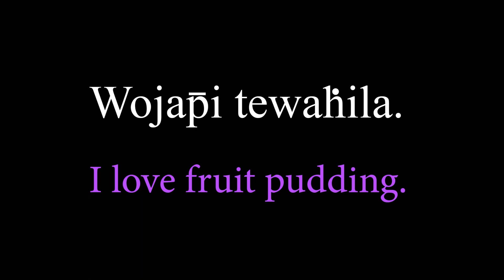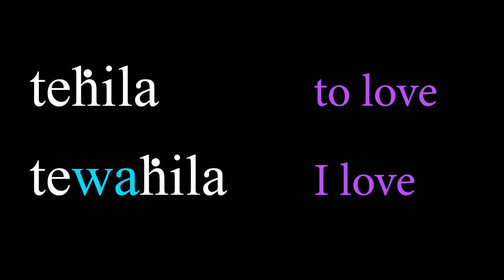The subject and the verb go at the end of the sentence. As long as the subject is inside the verb, the whole thing goes at the end. I'm just introducing this process of how a word can transform and add things to it. So tehila means 'to love,' and tewahila means 'I love.' The wa inside the word tewahila means 'I.'